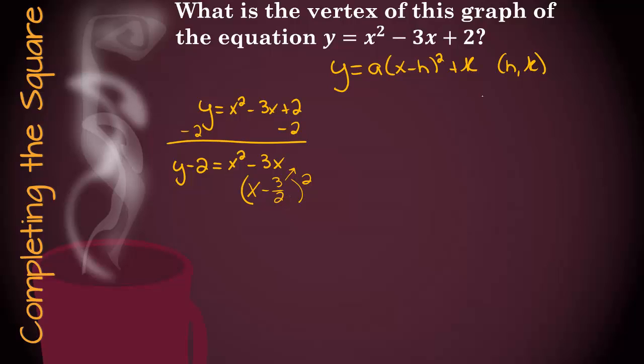So what I'm doing is actually taking negative 3 halves squared, which is 9 fourths. So we're going to add 9 fourths here. But if we add 9 fourths here, we have to do it to the other side also.